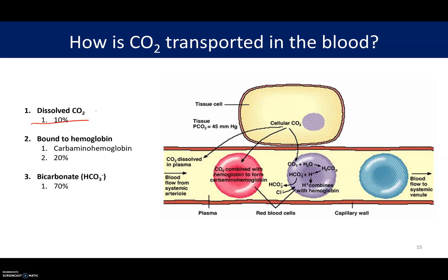We get about 10% of our CO2 that dissolves in the blood. CO2 more readily dissolves in the blood than oxygen does. We also get some of the CO2 that binds to hemoglobin, forming something called carbaminohemoglobin, which is a really fun word to say. The vast majority of our CO2 though is transported in the form of bicarbonate.